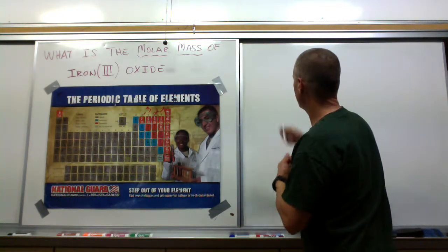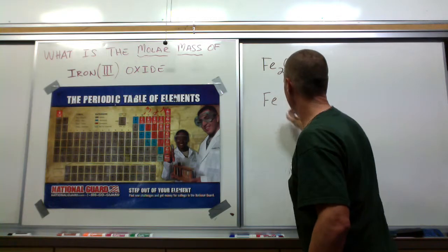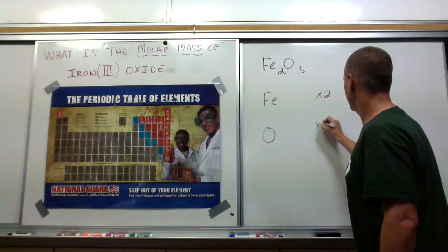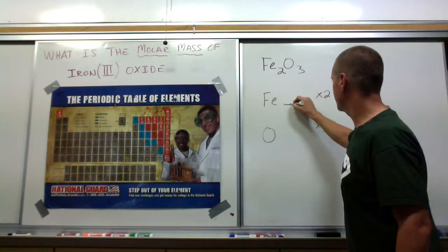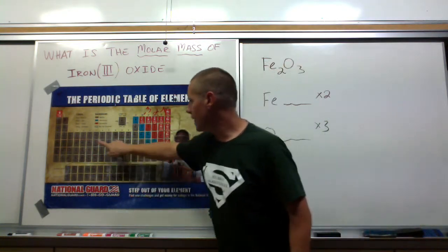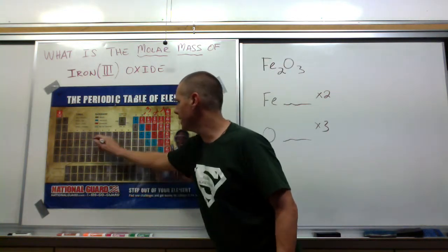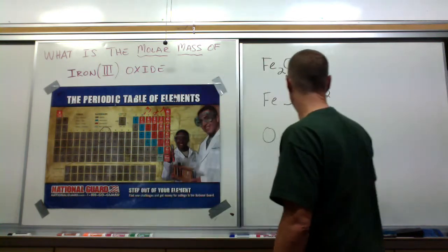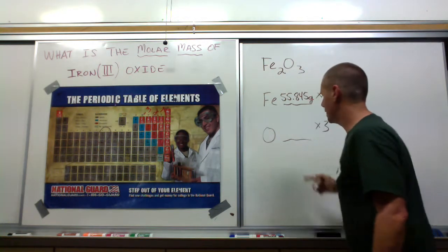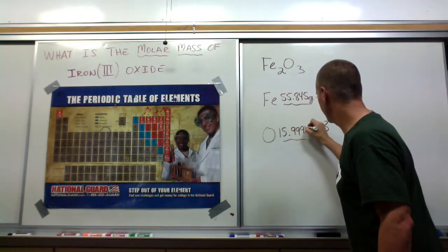Our formula is Fe2O3. We are going to need 2 of these irons and 3 of these oxygens. Now it is time to go to the periodic table for these atomic masses. They come off of the periodic table. Iron is 55.845 grams, a transition metal right in here. And oxygen is 15.9994 grams.